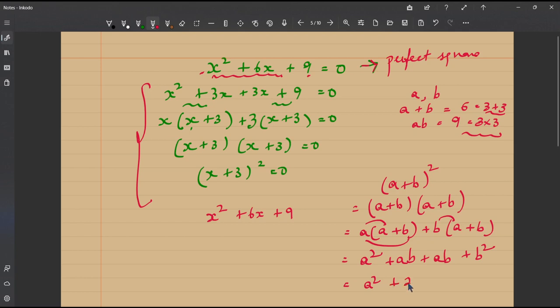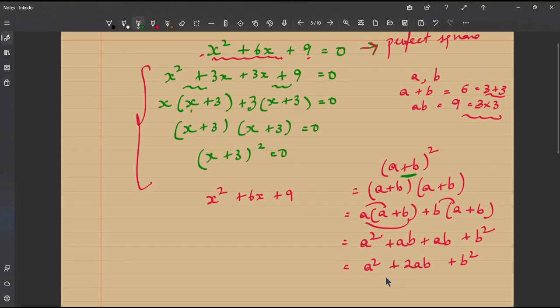ba can also be written as ab by the commutative property of multiplication. It is one and the same plus b squared. So, ab plus ab would give you 2ab plus b squared. So, we have obtained that a plus b the whole squared would be expressed as a squared plus 2ab plus b squared.